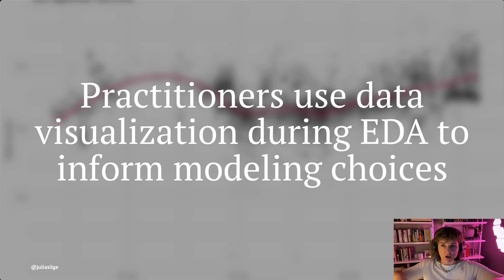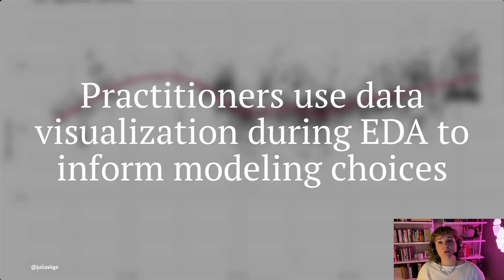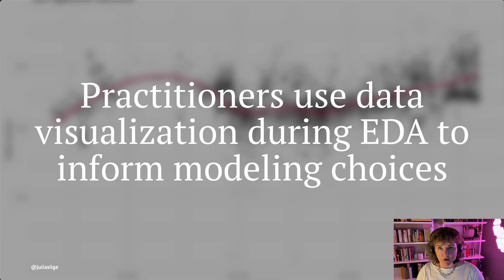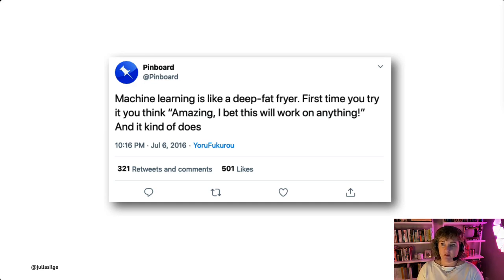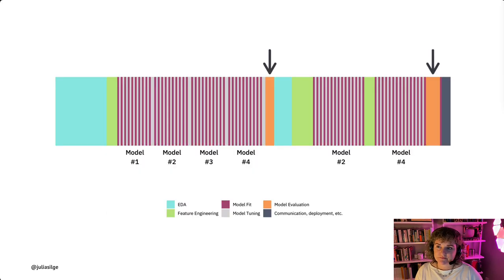Whether it's for engineering new features, choosing an appropriate model, or understanding data quality, data visualization during EDA has a huge impact on what model practitioners do later on, and in some ways it's the foundation on which the rest of the model process is built. It is often possible to estimate the best answer for some of these choices using empirical methods, but it's nearly impossible — or at least a bad idea — to remove entirely the element of human judgment. Machine learning algorithms are astounding and incredibly capable of learning patterns from large amounts of data, but vigorous adoption of EDA as part of the machine learning process is one safeguard against ending up in a situation where you have to ask yourself whether it was a good idea to just 'deep fry your data.'